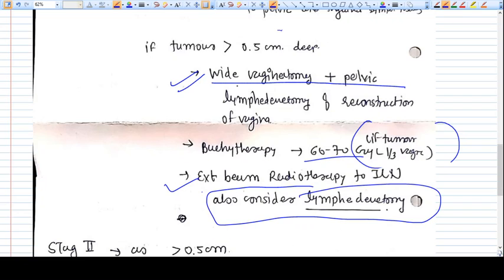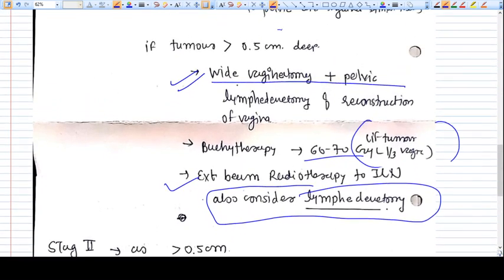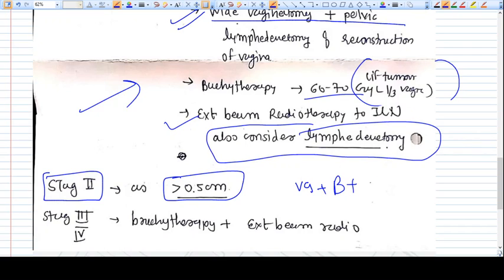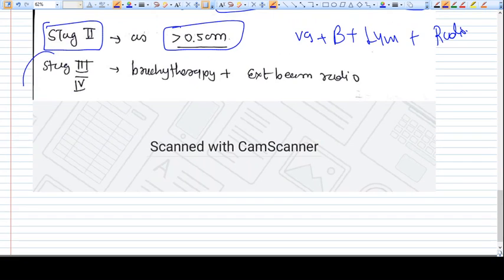This was stage one. What is the treatment of stage two? It's similar to stage one where we discussed treatment of more than 0.5 centimeter - total wide vaginectomy followed by reconstruction, brachytherapy, plus lymphadenectomy, plus radiotherapy.